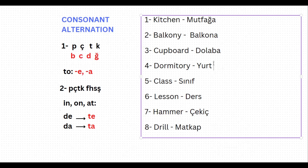The fourth word is 'dormitory,' which is 'yurt' in Turkish. If you want to say 'to the dormitory,' it is 'yurt-a.' But will this letter change? T — it needs to change because it is one of peçeteğe; it will change to d. 'To the dormitory': yurda.